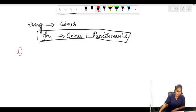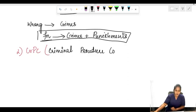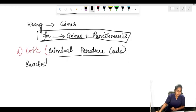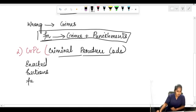The next one is CRPC. What is the full form of this? It's not Criminal Penal Code, it is Criminal Procedure Code. When it was enacted, how many sections are there, and what is the function?